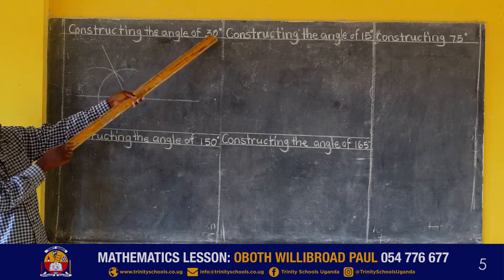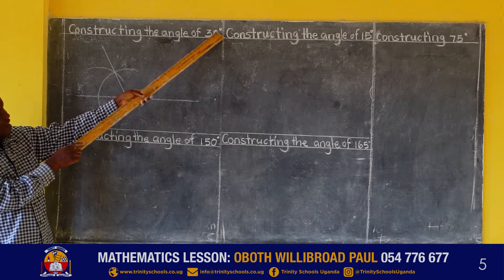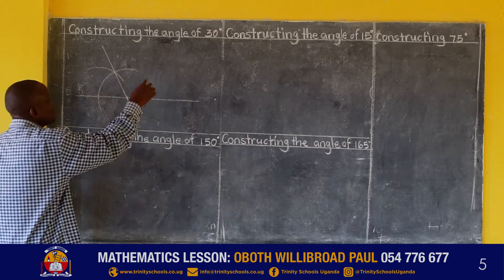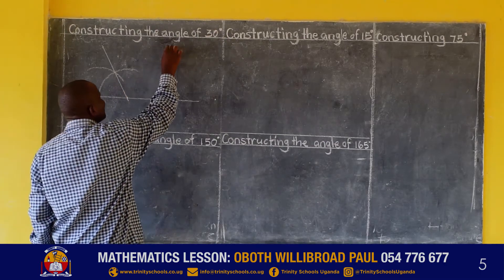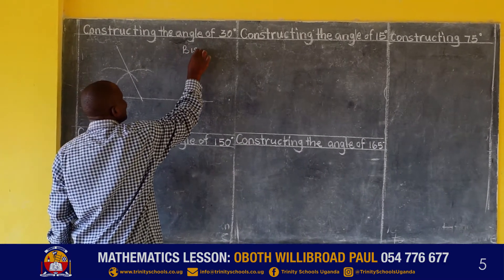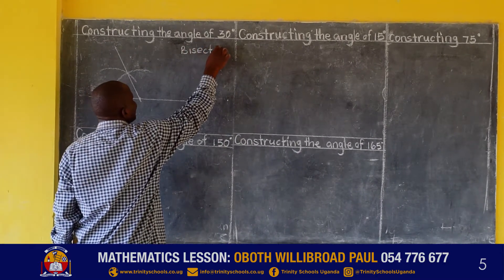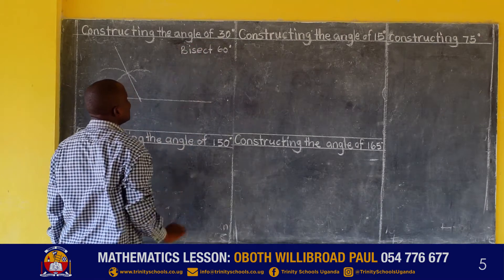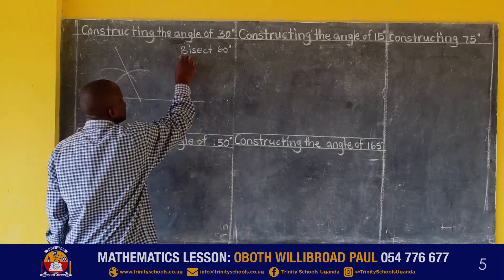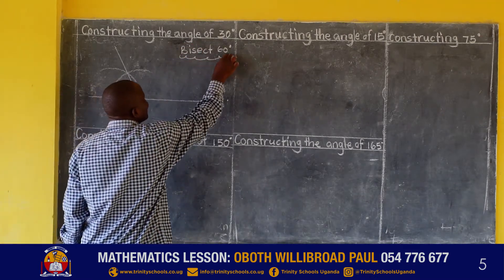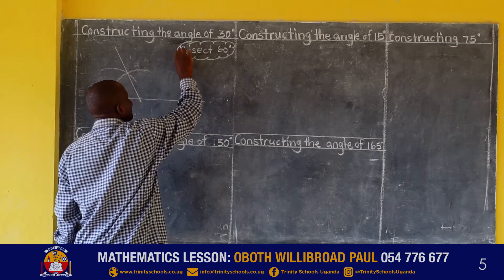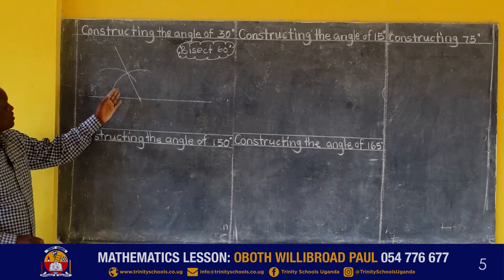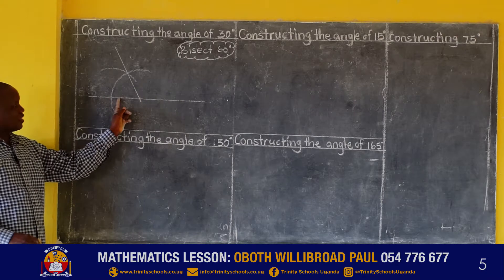But we are constructing the angle of 30 degrees. So to construct that angle of 30 degrees, we bisect 60 degrees. So we are going to bisect this angle here.